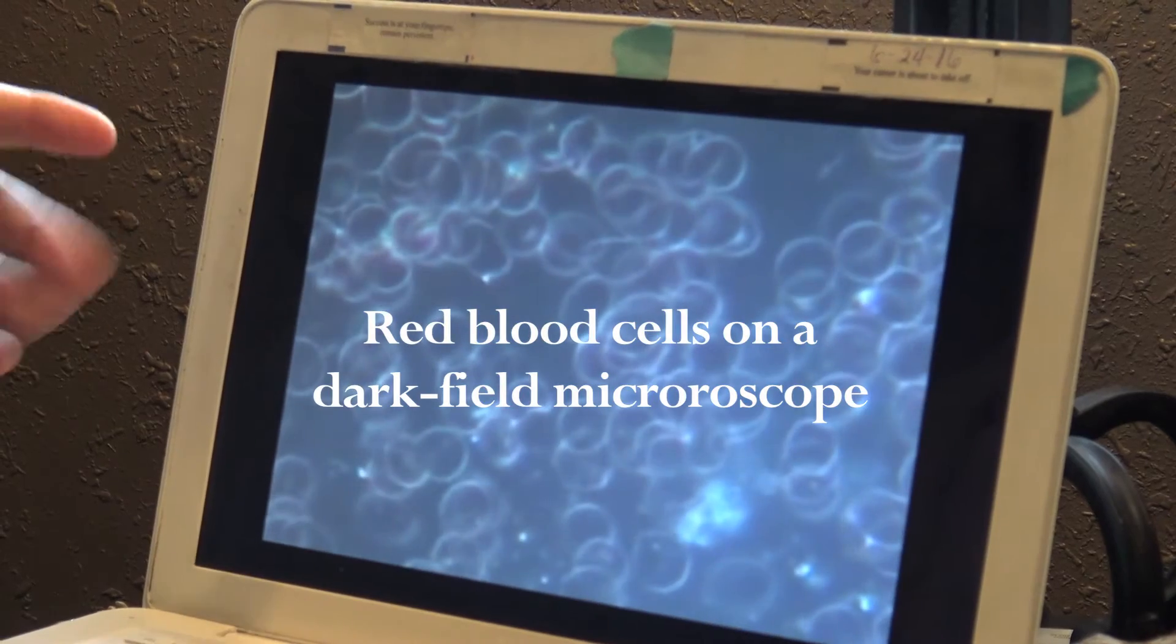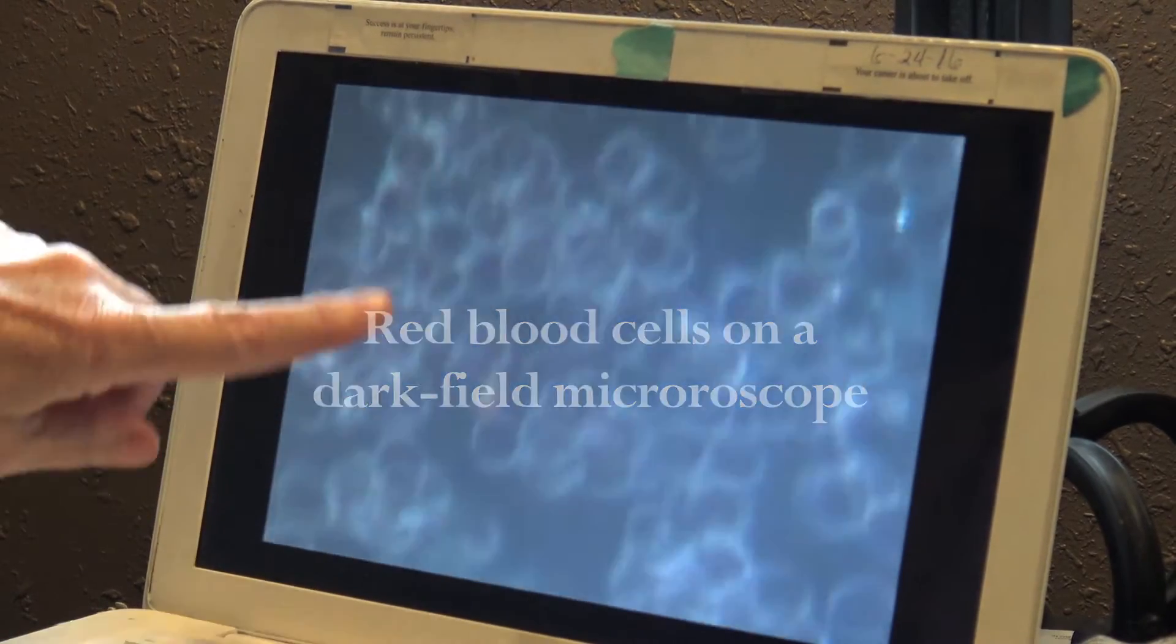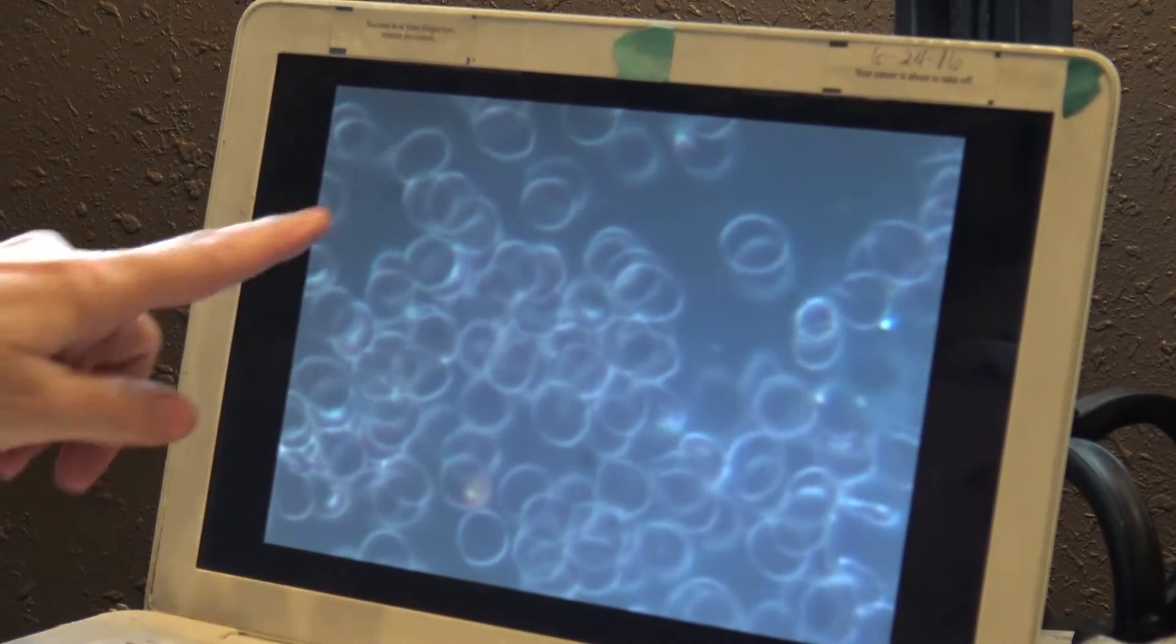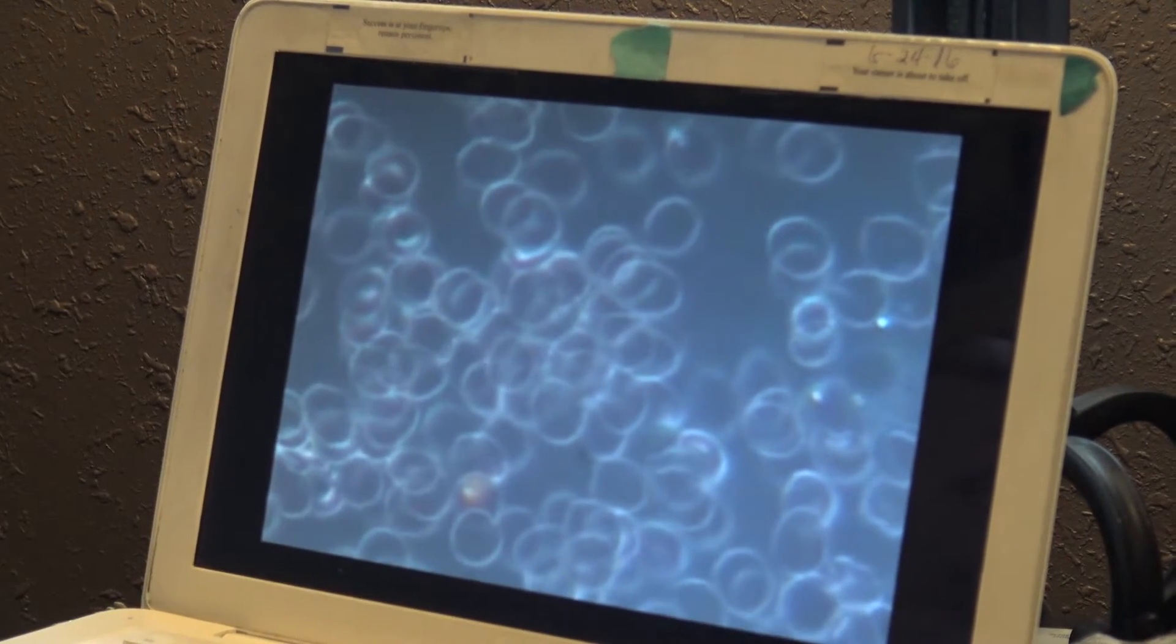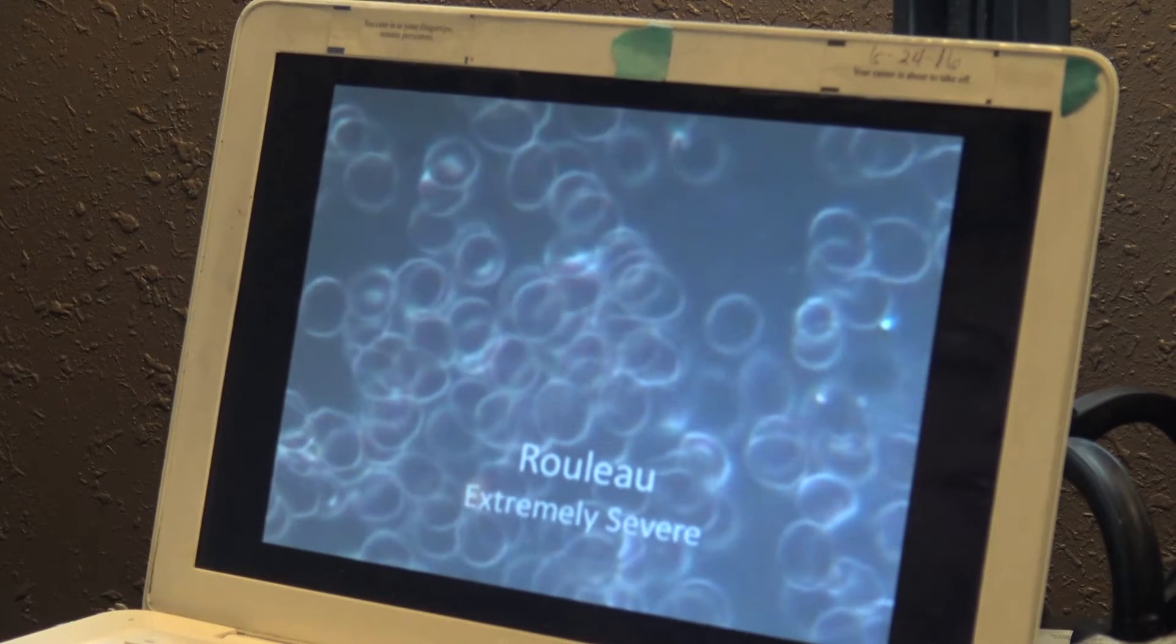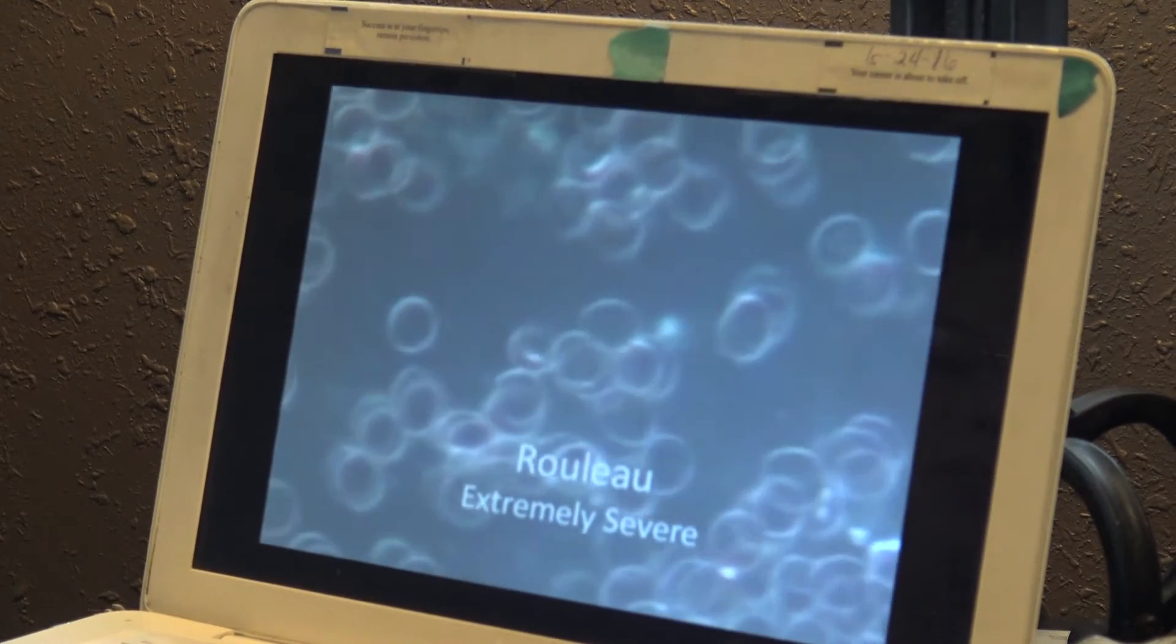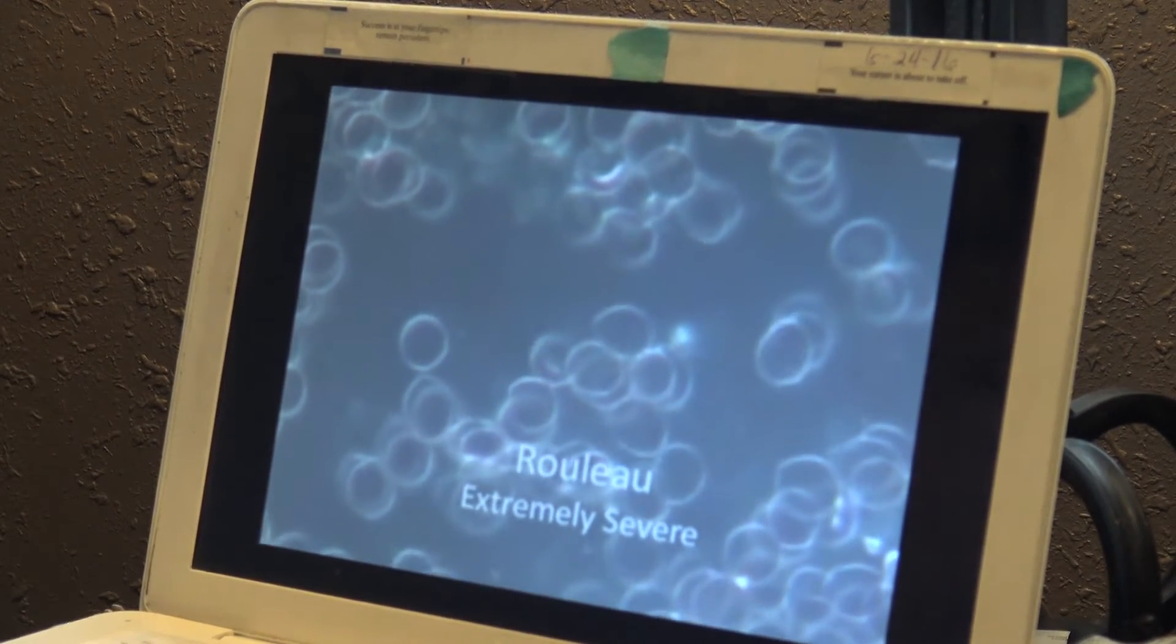So this is the bloodstream before a plant music therapy session where there's lots of RULO. And what that means is that the red blood cells are supposed to be singular like that, but they're all clumped together and they're sticking together, which means that the body's not getting oxygen and vitamins and nutrients that it needs in order to survive and be healthy.